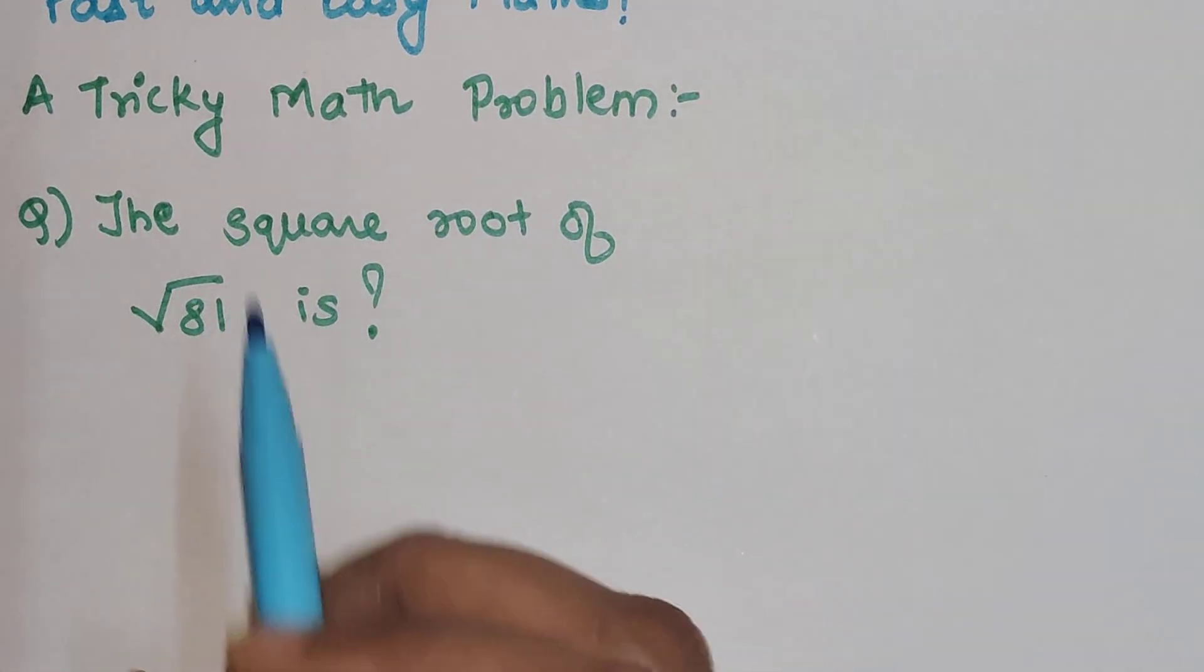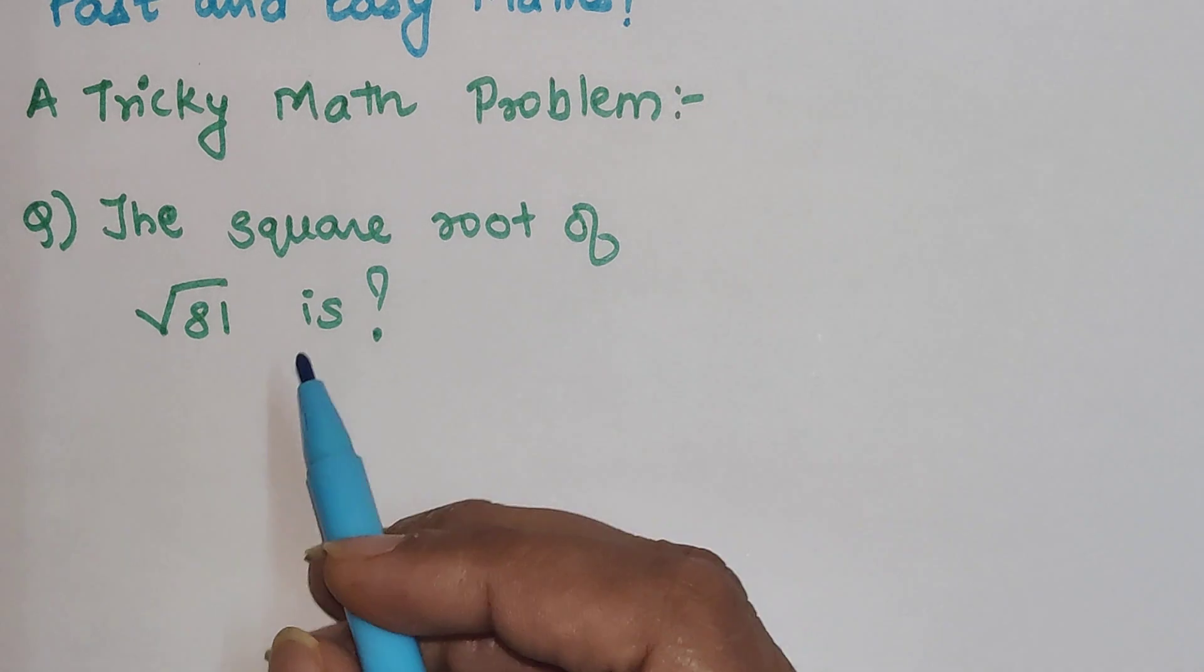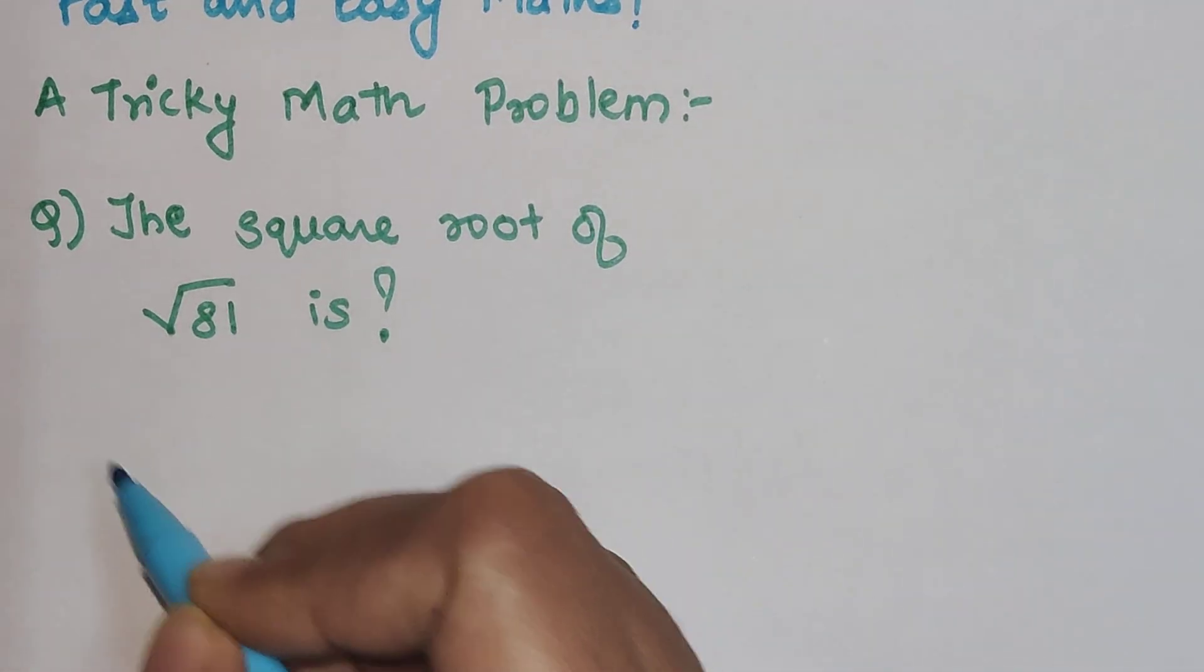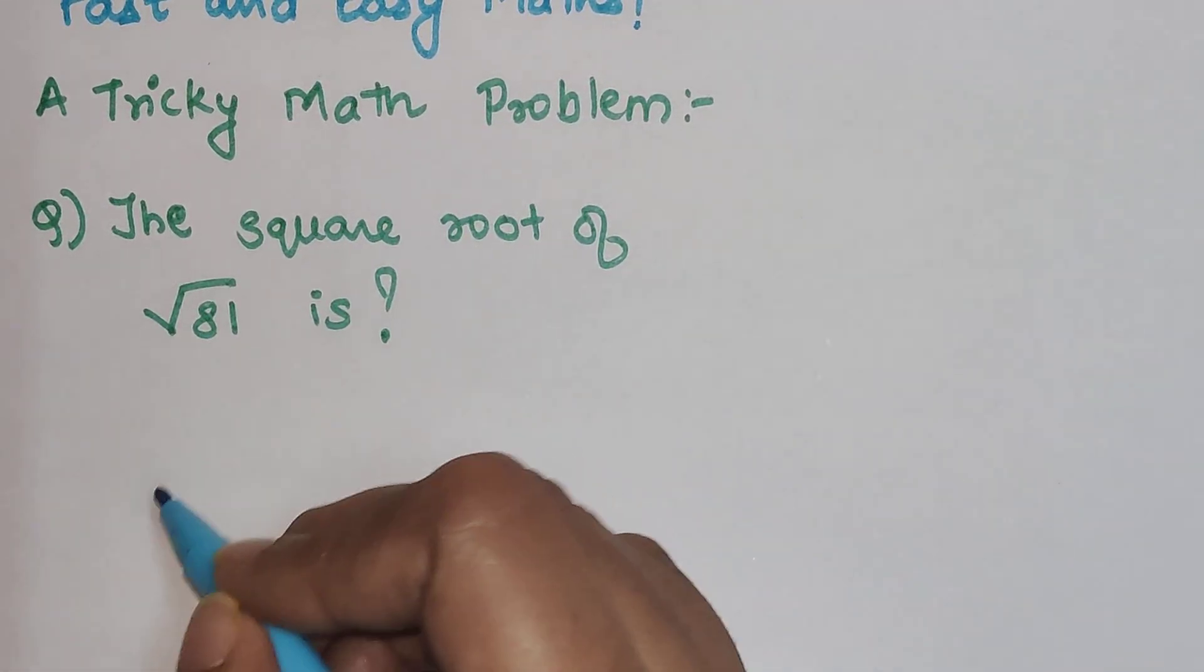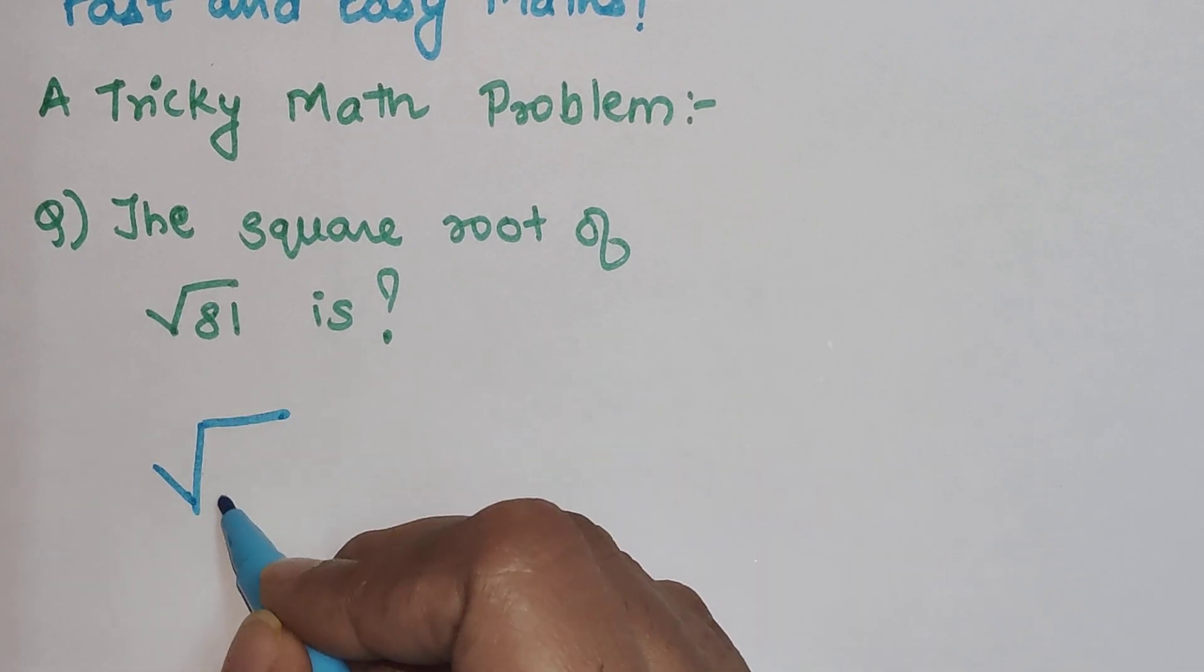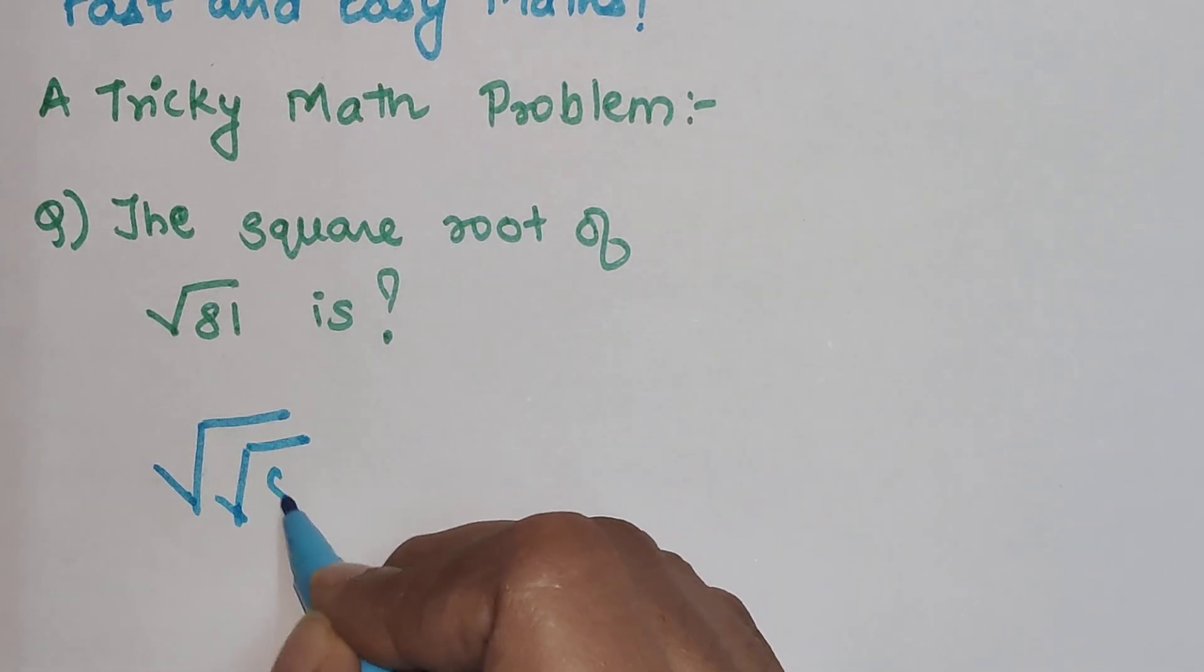Normally while reading, people make a lot of these kinds of mistakes. So actually, your actual representation of the question goes square root of square root of 81.